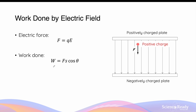Now recall, whenever a force acting on a mass results in a displacement S, work is being done. Energy is transferred into the charge when it is acted upon by this force due to the electric field. We can calculate this work done by multiplying the force by the resultant displacement, multiplied by cosine theta, where theta is the angle between the force and the resultant displacement.